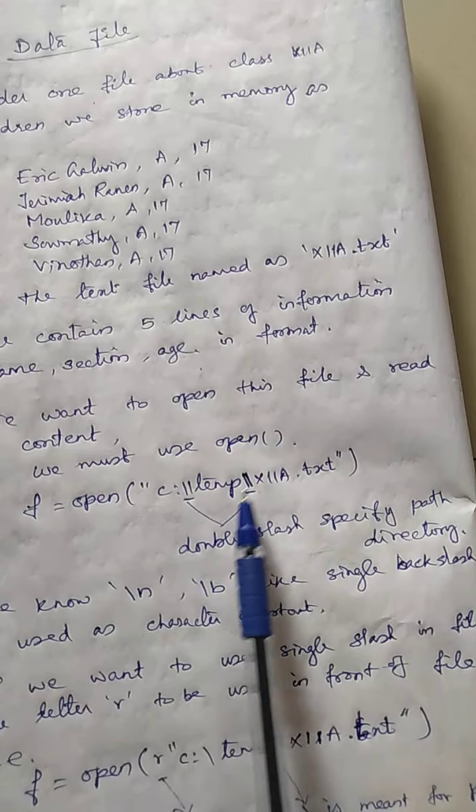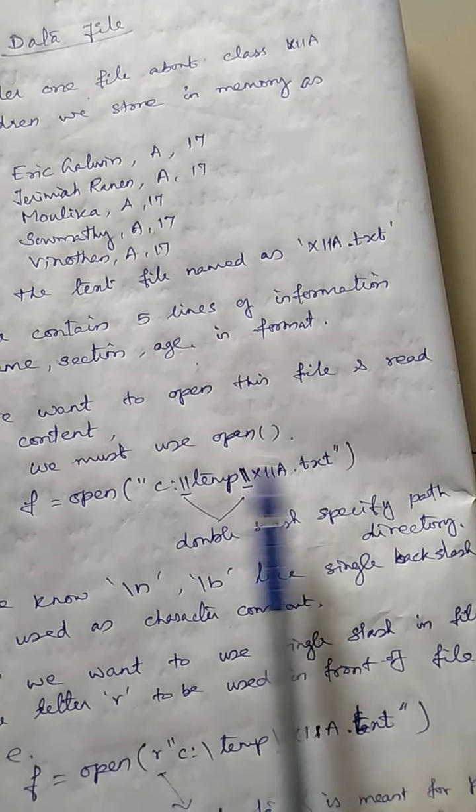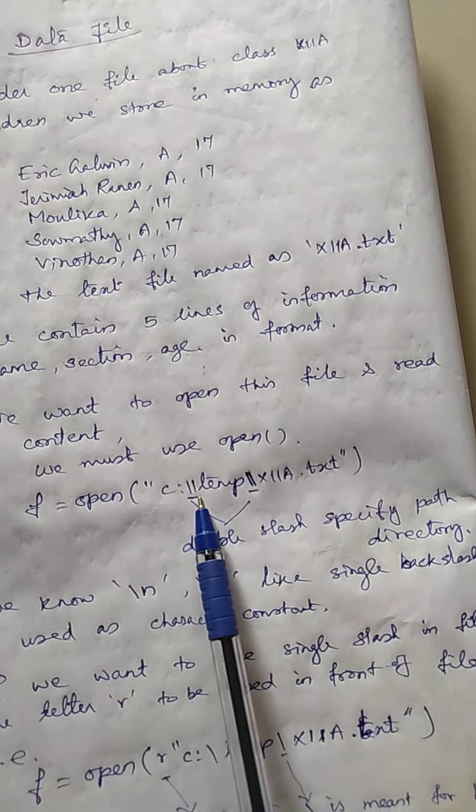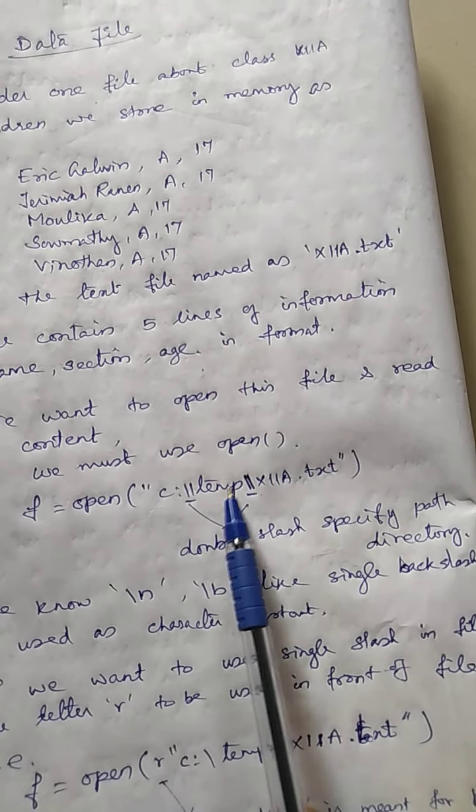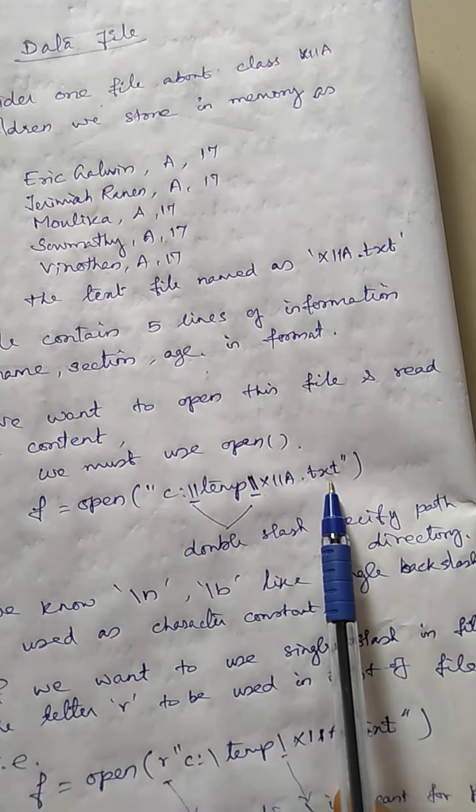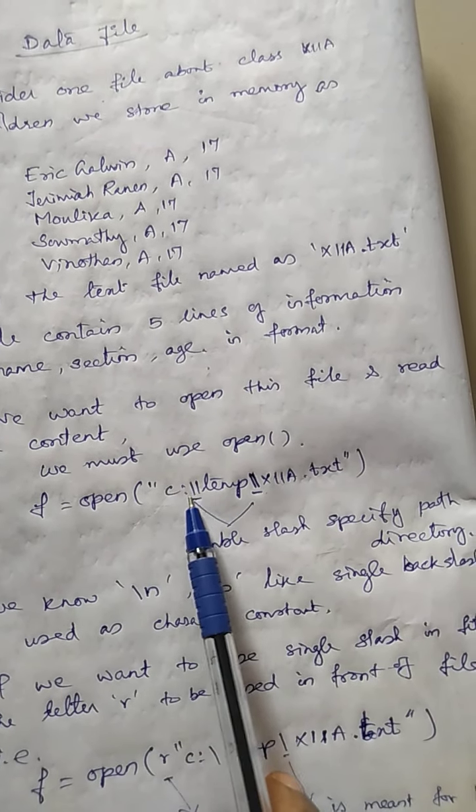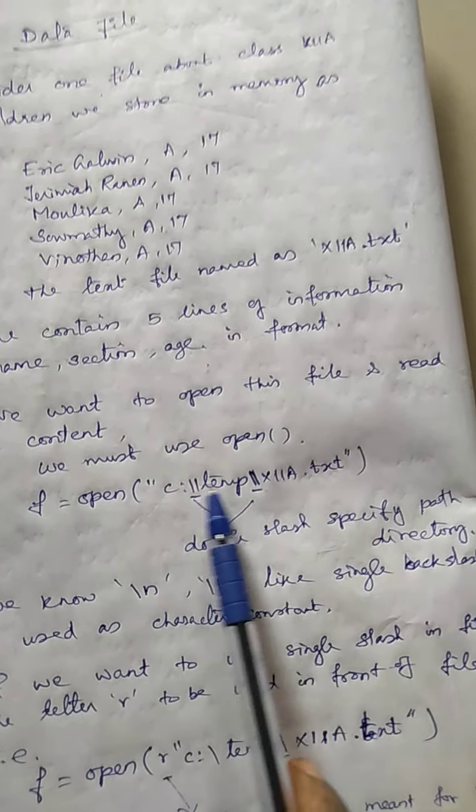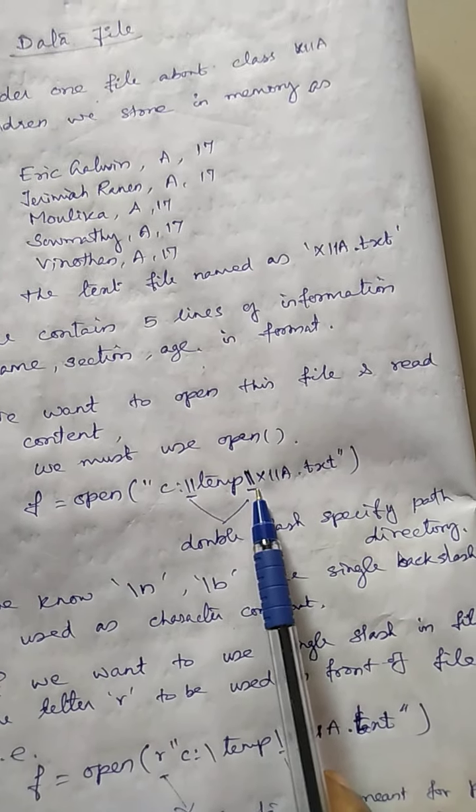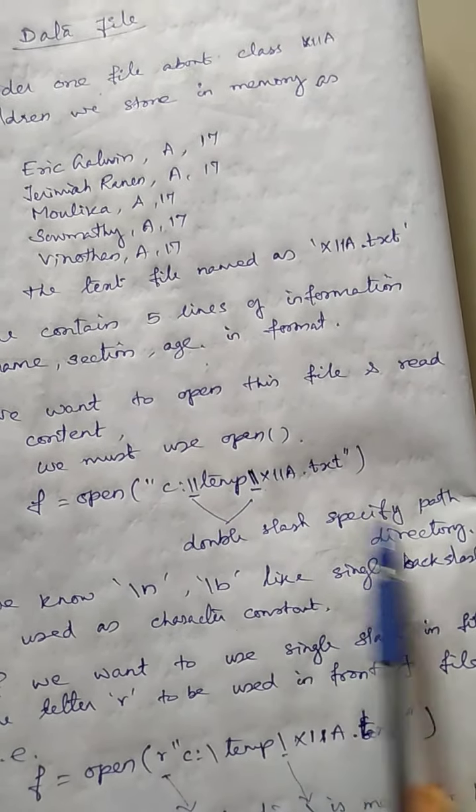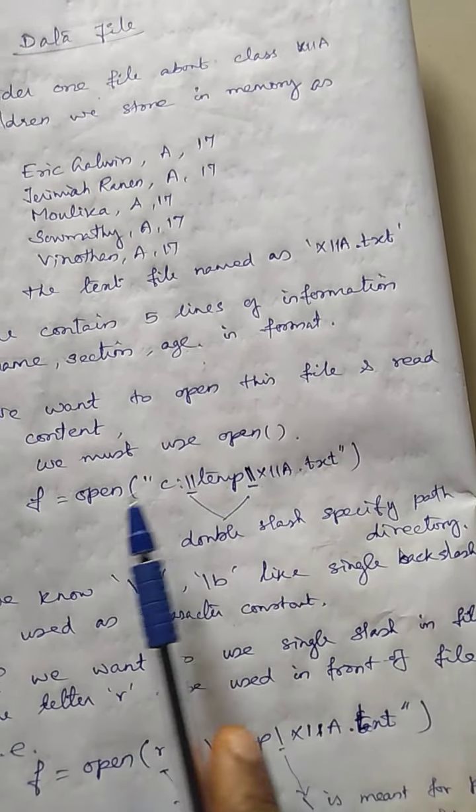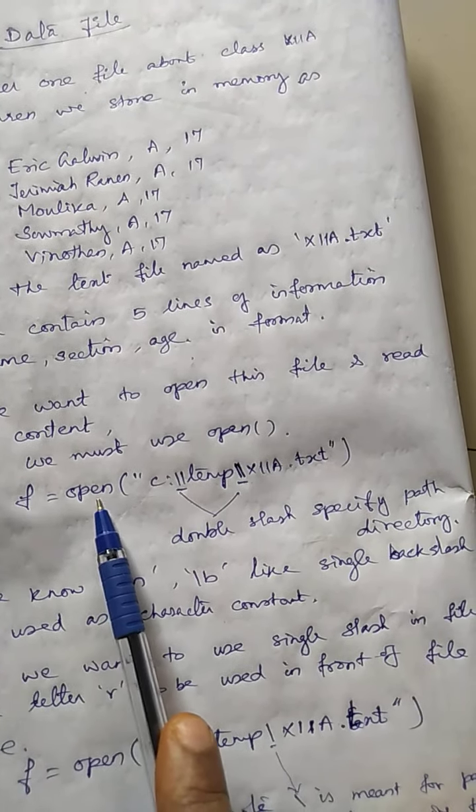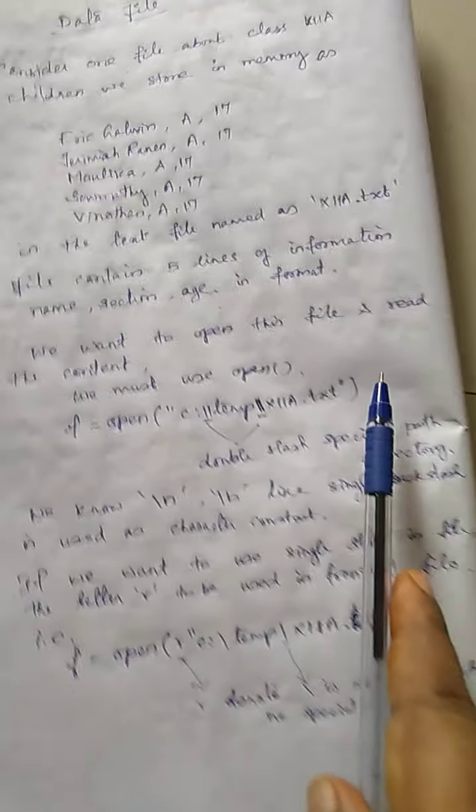We will discuss about the file mode. Now the file name. See here. We are giving the path where the file is located in C colon, the folder temporary. This is the directory, the folder. We are storing the file named 12A.txt. So here C colon after the double slash and then after this folder that has also double slash. The double slash specifies the path directory here.